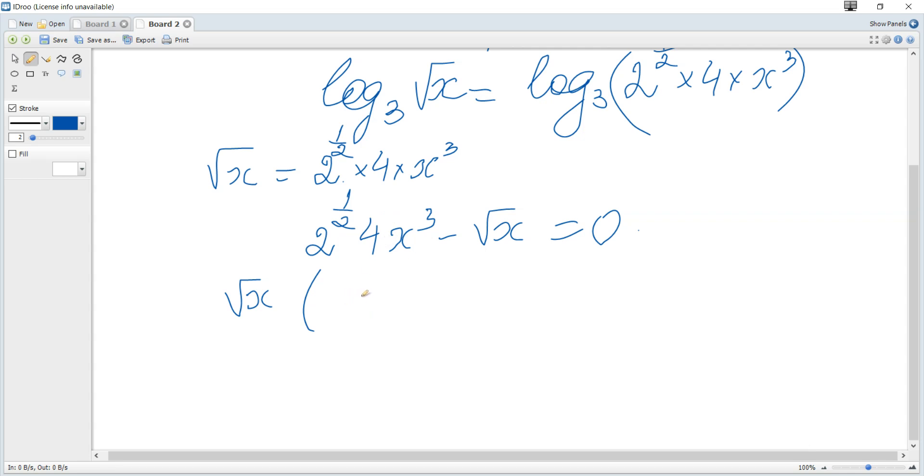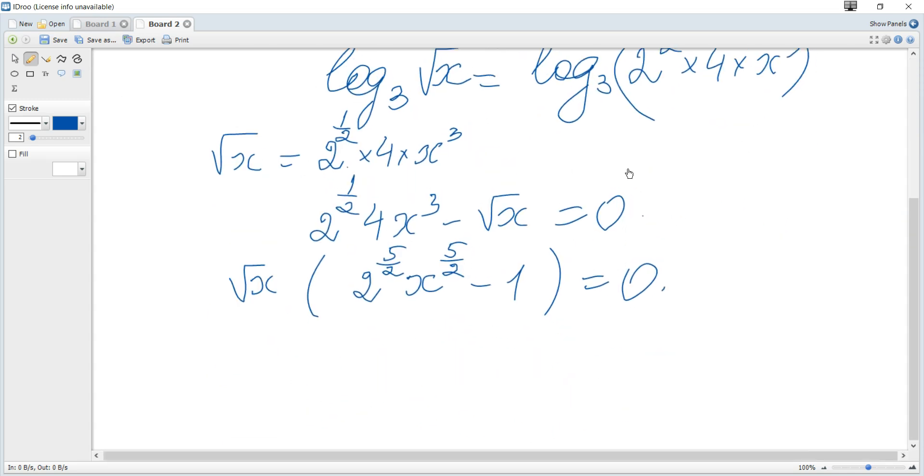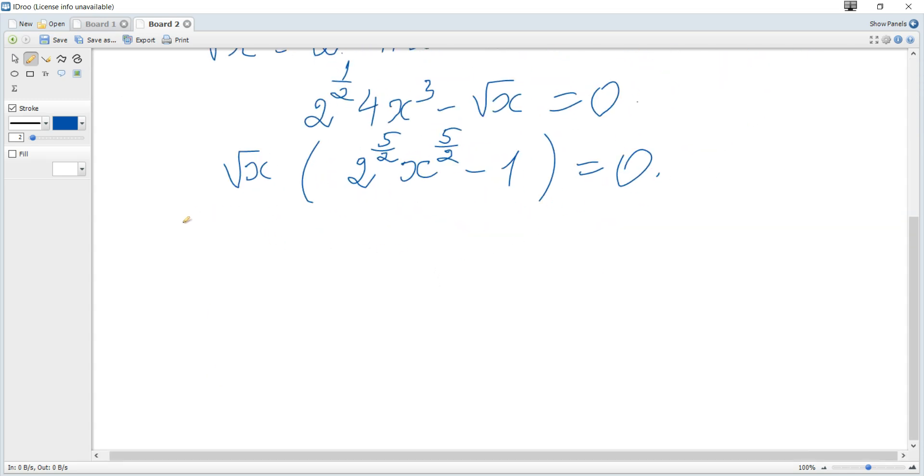Multiply 2^(1/2) and 4, and finally it's 2^(5/2) times x^(5/2) minus 1. Since x cannot equal 0, 0 is not a root. Hence 2^(5/2) times x^(5/2) minus 1 equals 0.